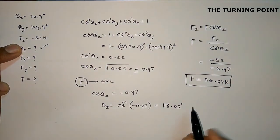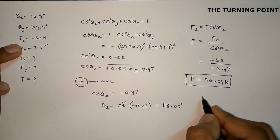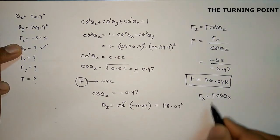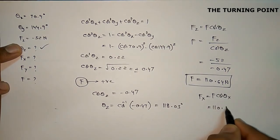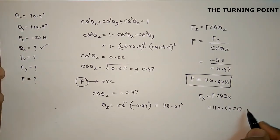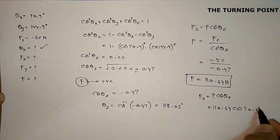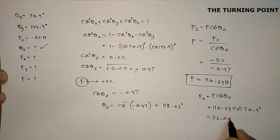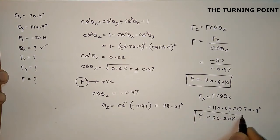Now we find Fx using the relation Fx = F·cos theta x. F is 110.64 newtons and theta x is given as 70.9 degrees. Simplifying, we get Fx = 36.20 newtons.